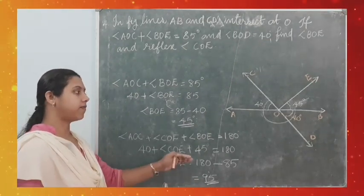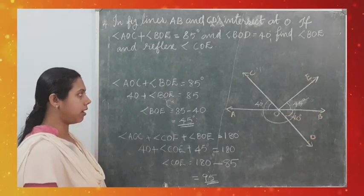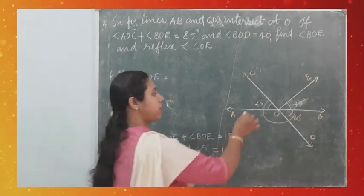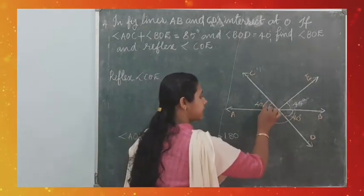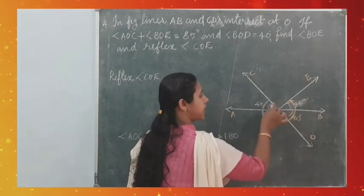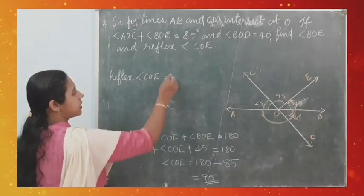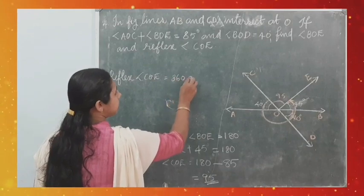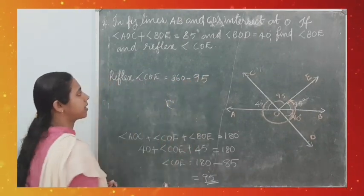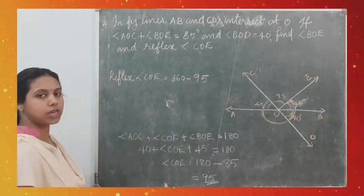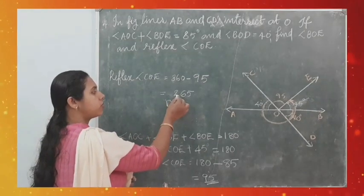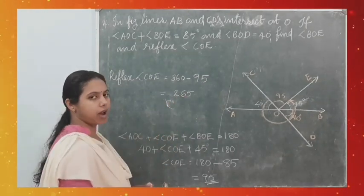Now we can find the reflex angle COE. Reflex angle COE = 360° − angle COE = 360° − 95° = 265°. So the reflex angle COE is 265°.